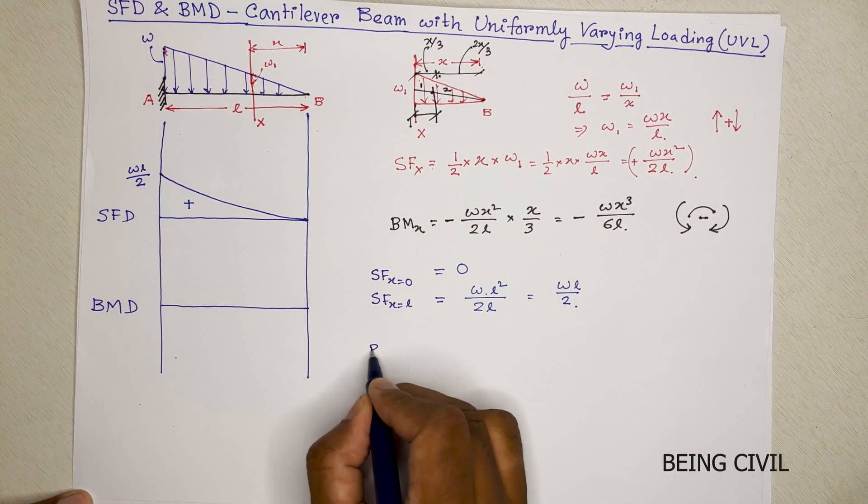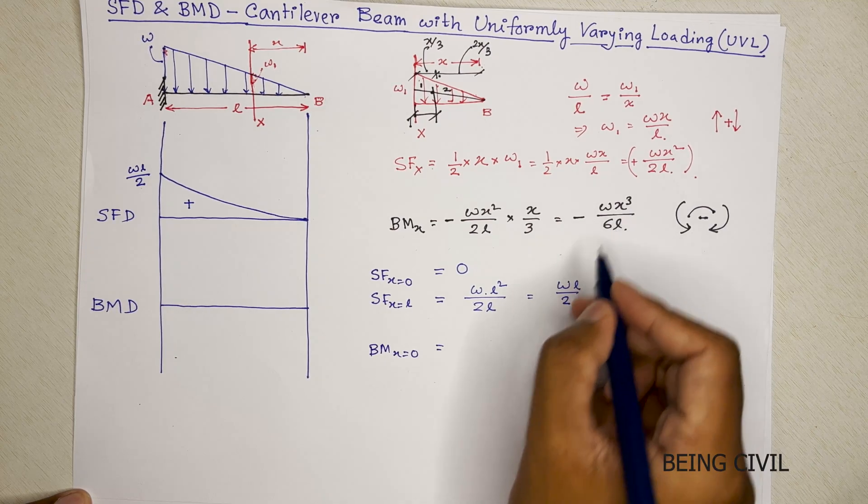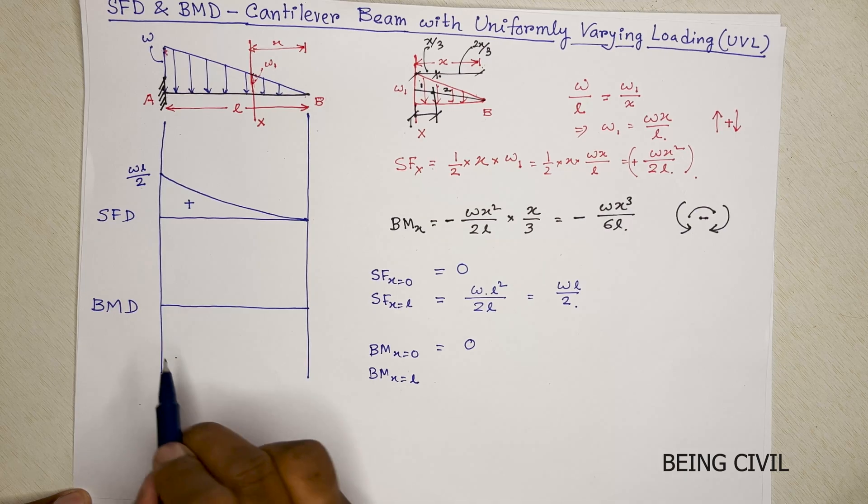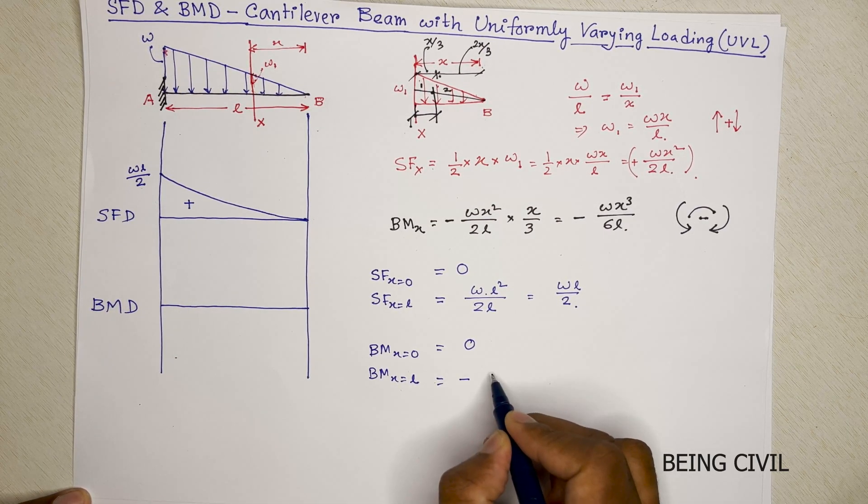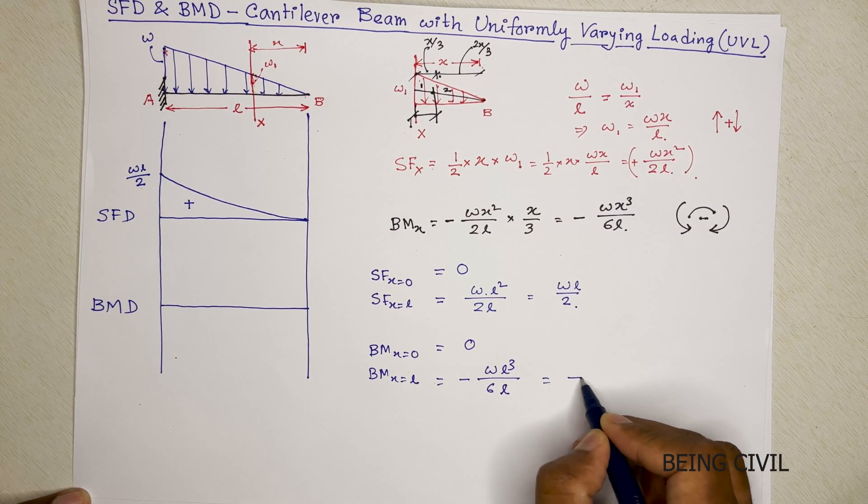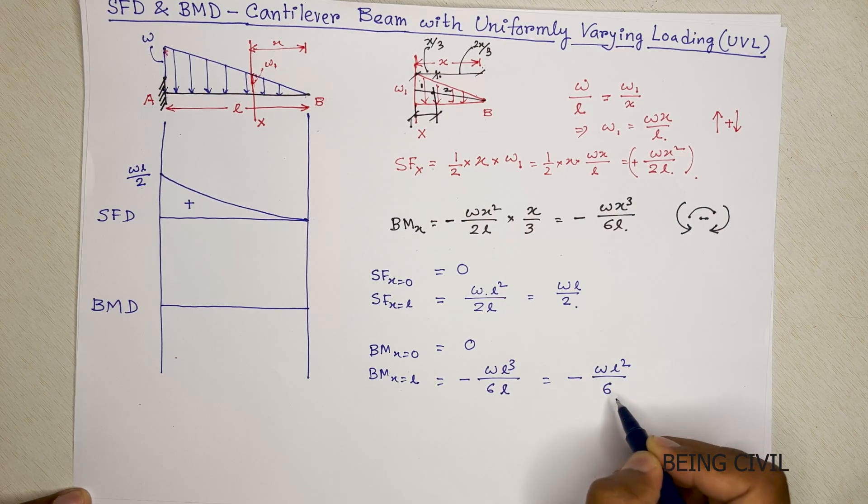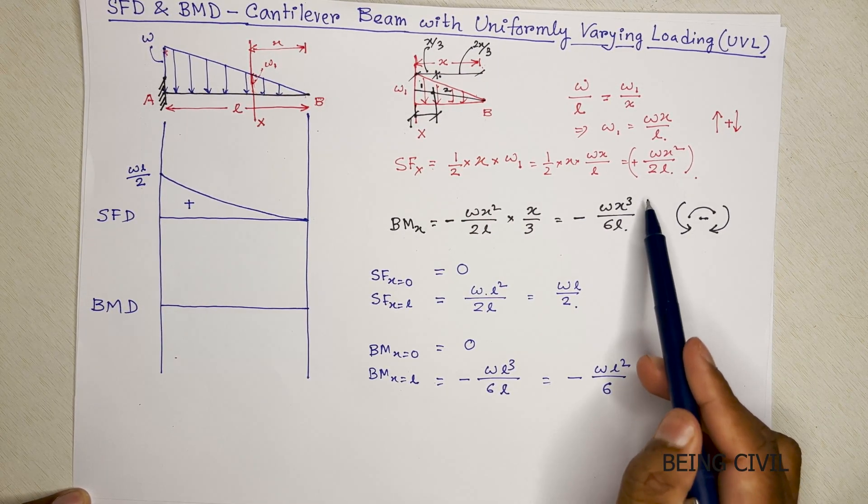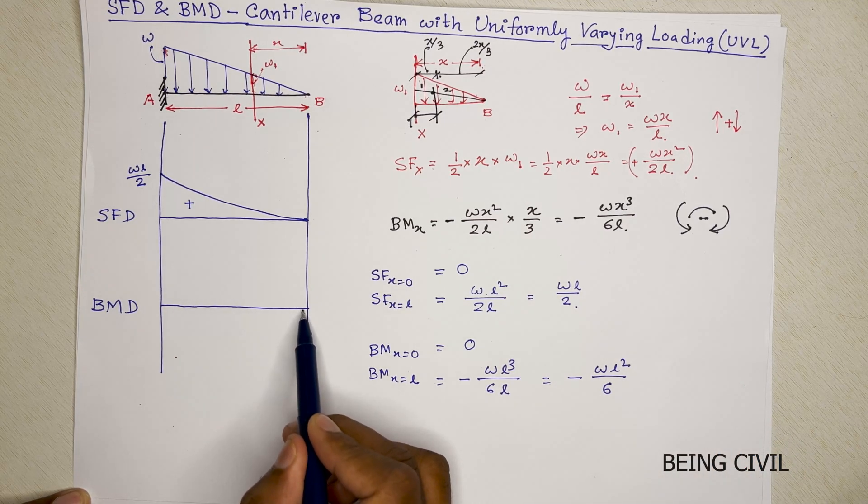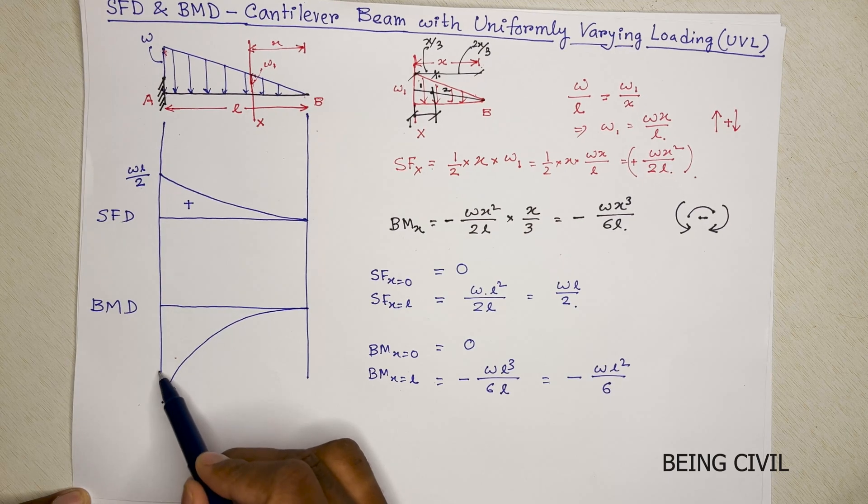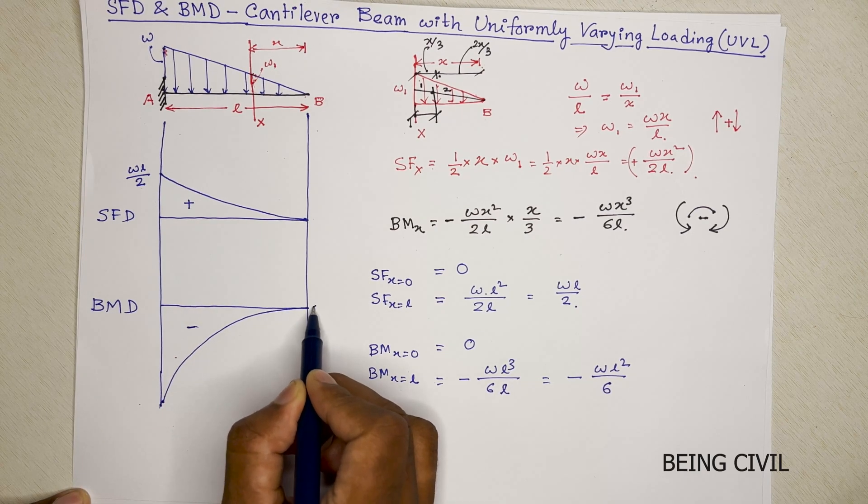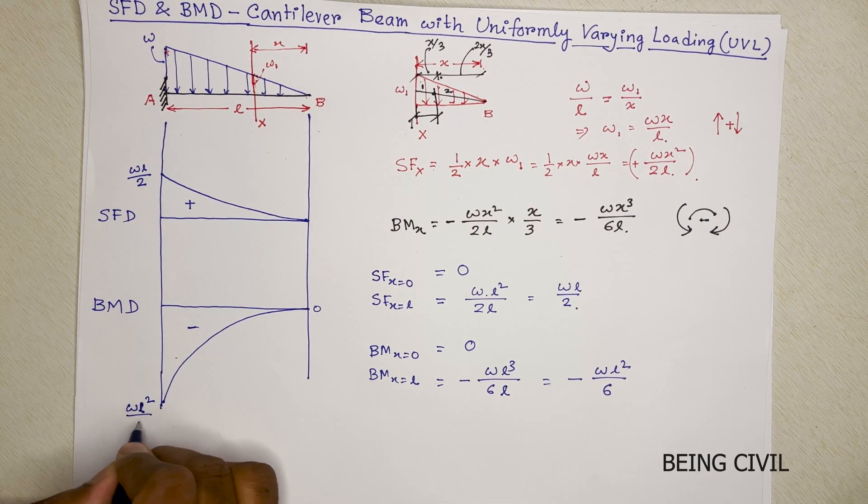And now, bending moment at x equal to 0 is 0. And bending moment at x equal to L, that is the fixed end, equals to minus WL cube by 6L minus WL square by 6. And you see, the equation varies with x cube, so it will be a cubic curve. And the sign is negative, so the head is just 0 and here is WL square by 6.